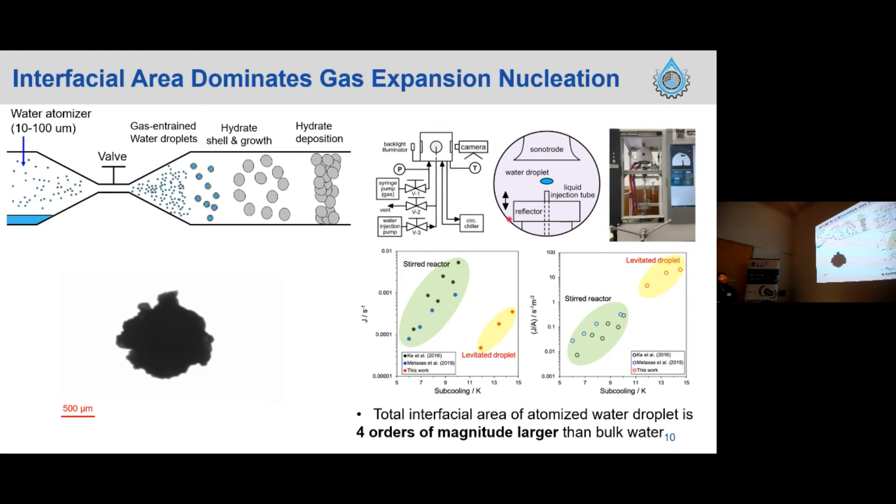This was enabled by a high-pressure acoustic levitator. The transducer which emits the acoustic field, the ultrasonic wave, and the reflector, they make the acoustic field and the water droplet is held suspended in the high-pressure gas environment. The two figures show our results from this high-pressure acoustic levitator. The left is showing absolute nucleation rate and the right is the area-scaled nucleation rate. The levitator droplet result was compared to the stirred reactor, which is very large scale, and with the stirred and rocking cell experiments, you'll find a big difference. But when it's scaled to the interfacial area, they are aligned very well. So I would say here, the interfacial area matters on the hydrate nucleation.